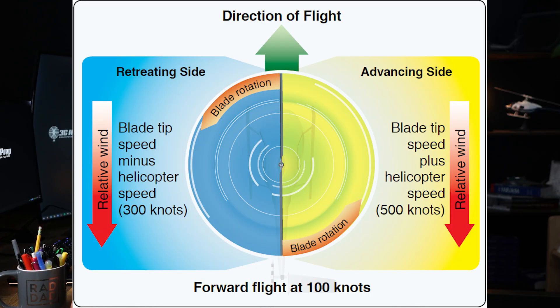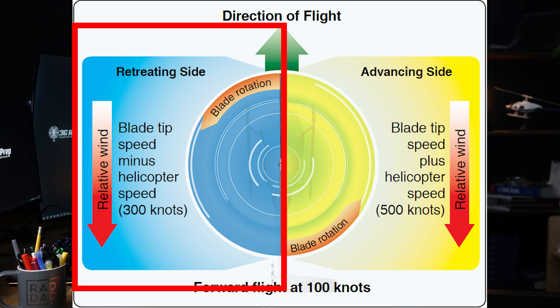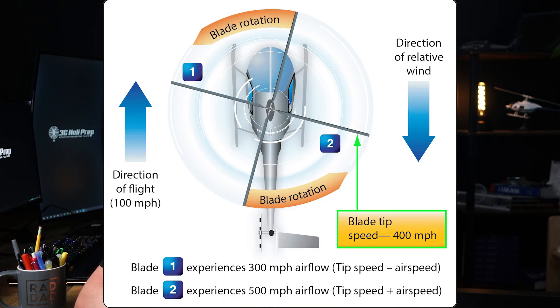Why is blade flapping even necessary? In helicopter flight, particularly during forward motion, the helicopter rotor blades experience a dissymmetry of lift, meaning unequal lift between the advancing blade and the retreating blade.